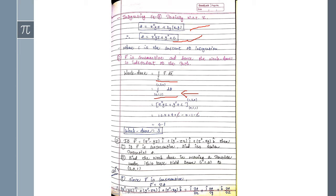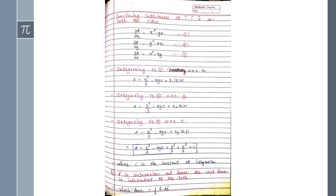Hope you all understood. For all such examples, if F̄ is given, the first condition is: if F̄ is conservative, find its scalar potential φ. The second condition is to find the work done. For the work done in a conservative field, use F̄ = ∇φ, put in the values, compare equations 1, 2, and 3, then integrate with respect to x, y, and z respectively.